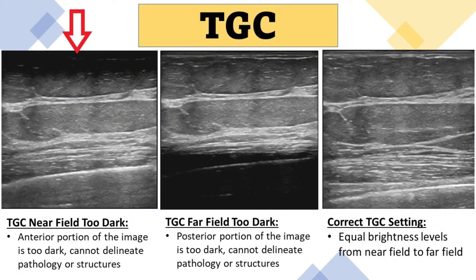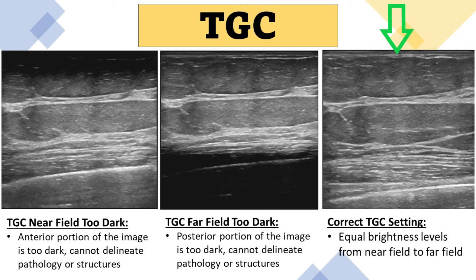In the first image, the TGC in the near field is set too dark, meaning the anterior portion of the image is too dark and you cannot make out the structures of the breast or visualize pathology. In the next image, the TGC in the far field is set too dark, making the posterior portion of the image too dark in color so you cannot make out structures and would easily miss pathology. In the last image, the correct TGC settings are applied, giving equal brightness levels from the near field to the far field.